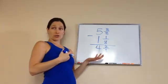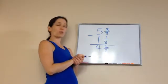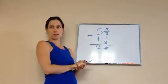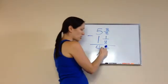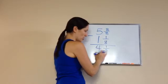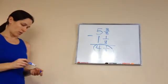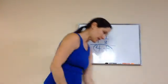That's our answer, but can something else be done? Reducing. Yes. What will go into both two and eight? Two. So, we'll divide two divided by two, and that will give us one. And eight divided by two would give us four. Final answer, four and one-fourths. And that is lesson 26.